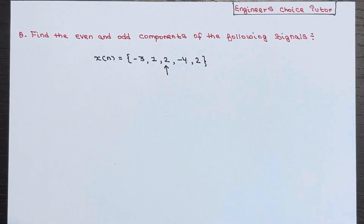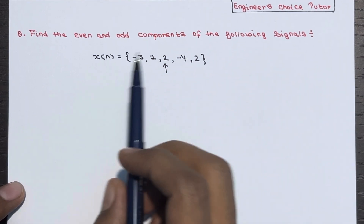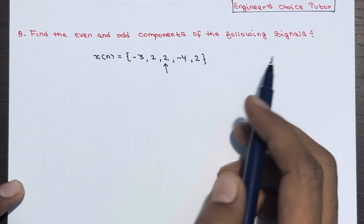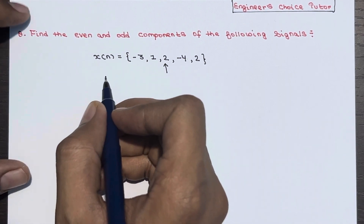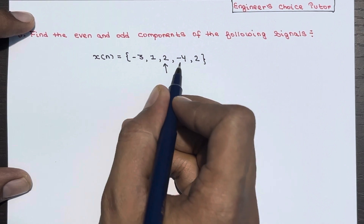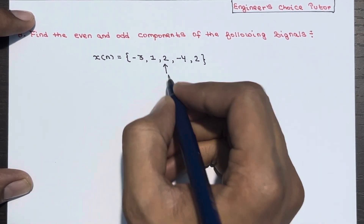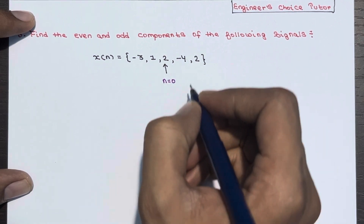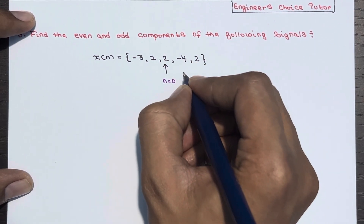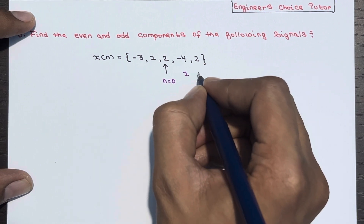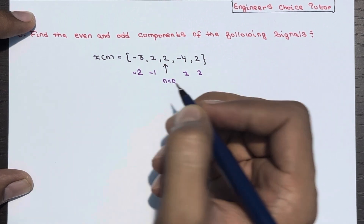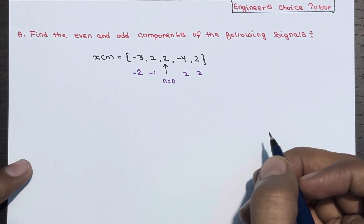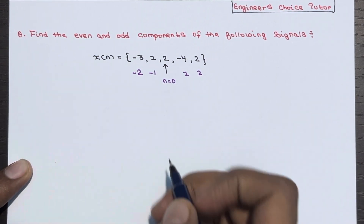Hi everyone, in today's lecture we will see one more numerical where you have to find the even and odd components of a signal. This time the signal is given in sequence representation, so x[n] = {-3, 1, 2, -4, 2}, where the arrow indicates n=0. The value at n=1 is -4, n=2 is 2, n=-1 is 1, and n=-2 is -3. We have to find the even and odd components of this x[n].